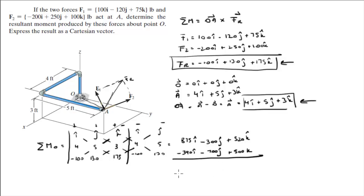So when you add this up, you get that the final answer is 485i minus 1000j plus 1020k. And these are the moments at O that the two forces create.